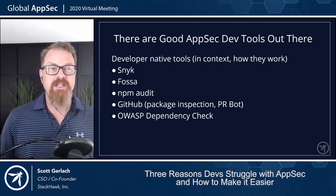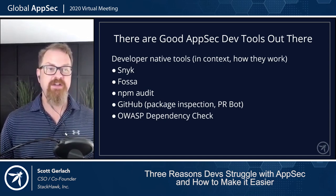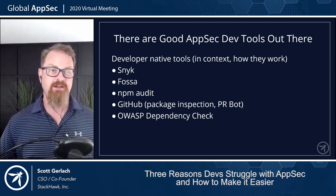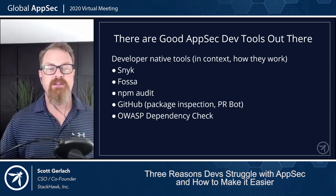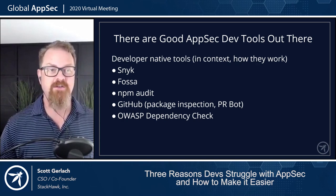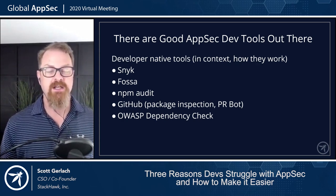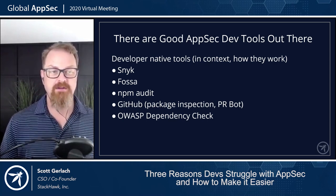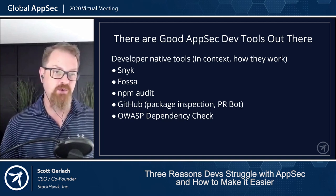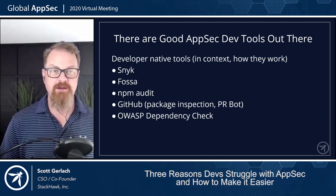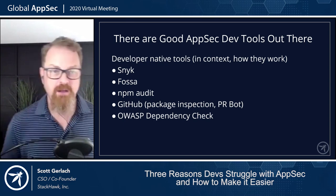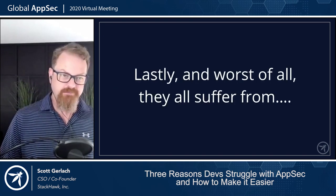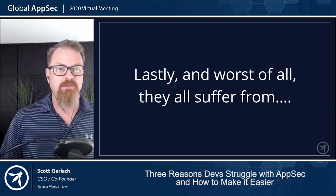There are good AppSec dev tools out there — stuff that's developer-native in the context of how they work in their workflow, self-service, helping them produce secure, safe code. Some of those tools are Snyk, FOSSA, NPM audit, GitHub's package inspection and PR bot, Dependabot, the OWASP dependency checker tool, and at least one other one from the company I come from. All of these kinds of application security tools, for the most part, all suffer from this last problem — and that is problem three.